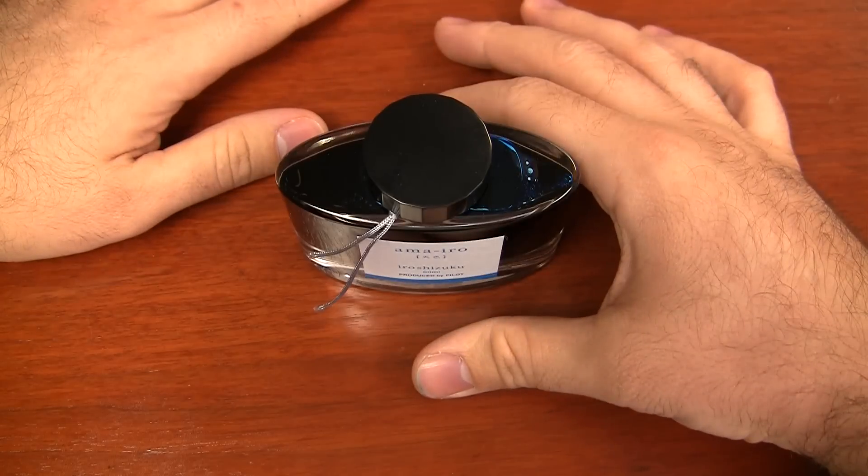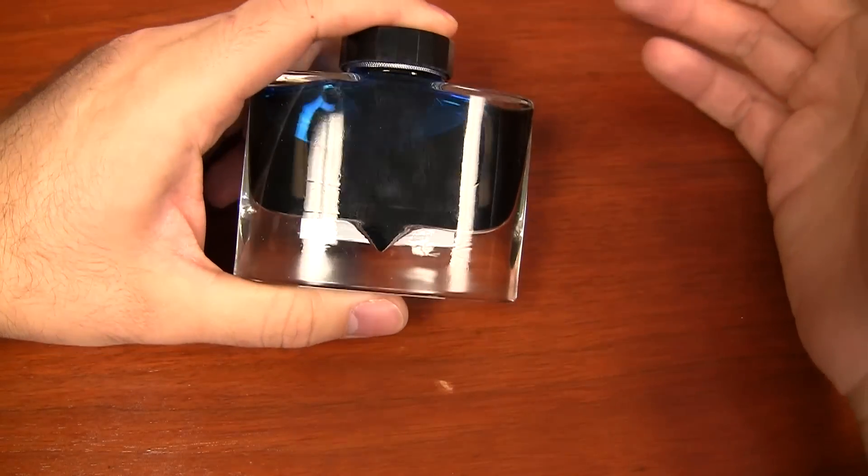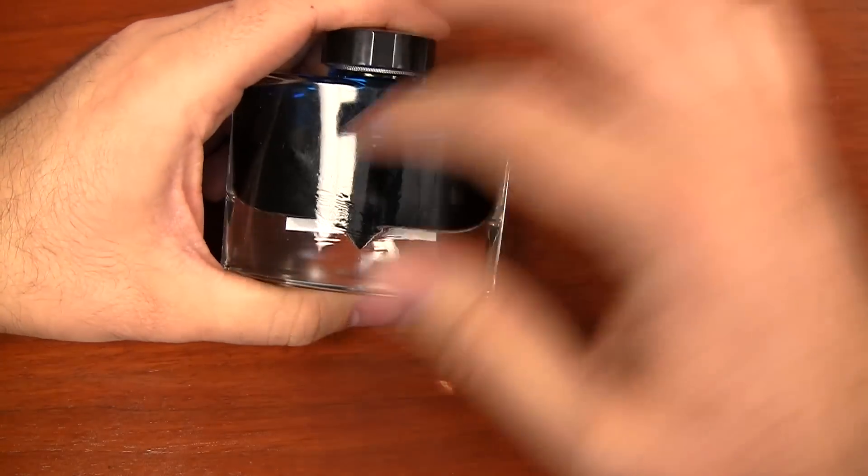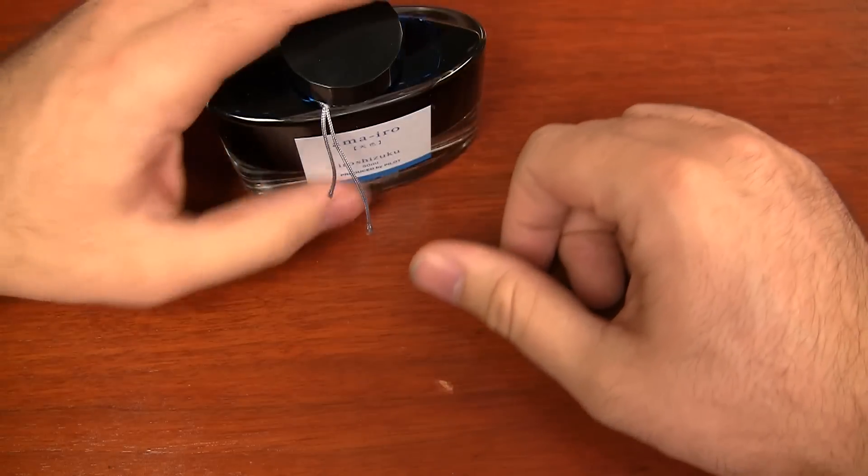The ink itself is some good stuff, but just to cover the bottle. If you've never seen an Iroshizuku before, I've reviewed a few other inks, but the bottle is great. It's got this little dip down in here, it's got a nice wide mouth, wide opening. It's good stuff.